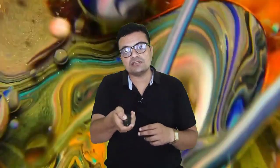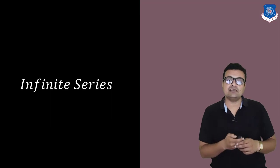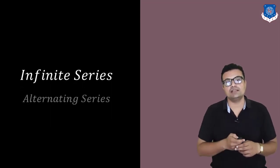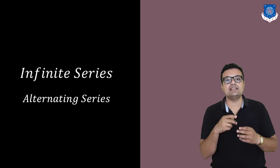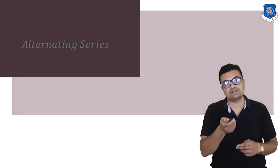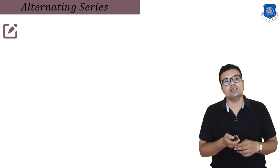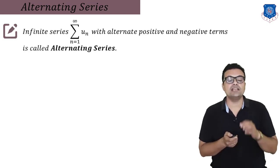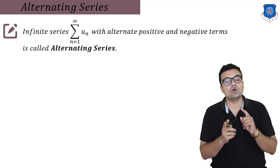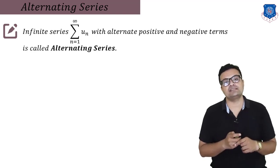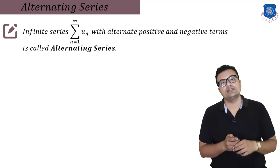We will now discuss how to check whether a series is convergent when the given series is alternating in sign term by term. Let us consider an infinite series and clarify what we mean by an alternating series. The infinite series summation from n equal to 1 to infinity of u_n, with alternating positive and negative terms, is called an alternating series.